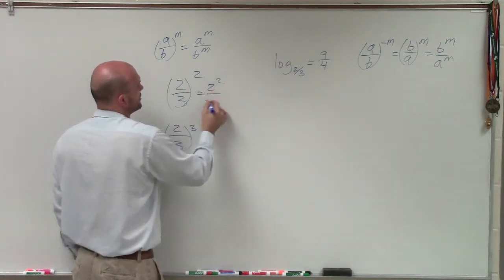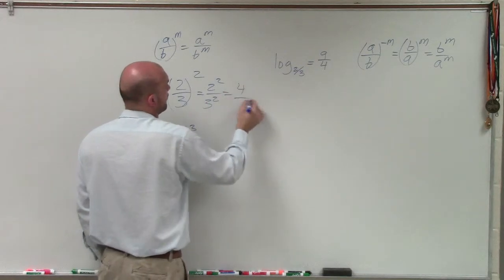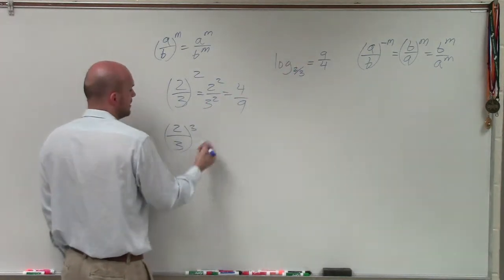So therefore, that's 2 squared over 3 squared, which equals 4/9. Very close, but not exactly.